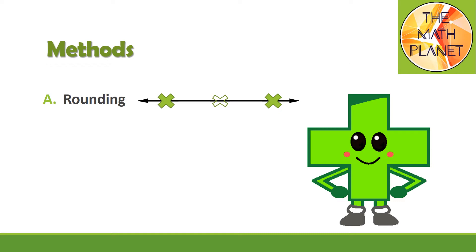If your number is closer to the lower benchmark, you round your number down to the lesser number. If your number is closer to the upper benchmark, you round your number up to the greater number. And if your number is exactly at the halfway number, you will also round your number up to the greater number.